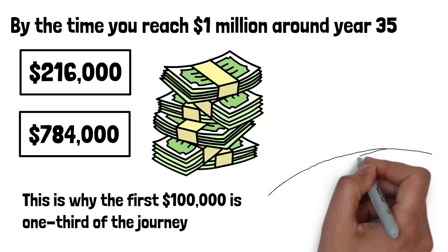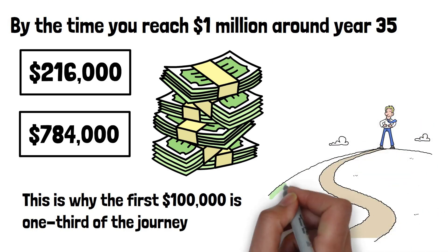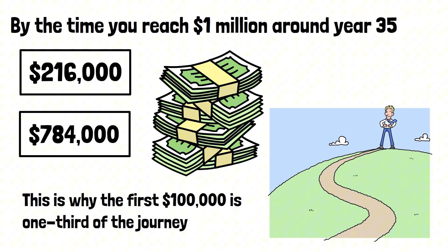This is why the first $100,000 is one-third of the journey. It's the steepest part of the hill. But once you get over that ridge, the rest becomes faster, easier, and increasingly automatic.